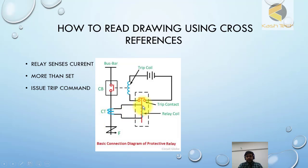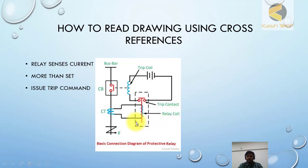Sometimes a relay does not give a trip command directly to the coil. Instead, it operates an intermediate relay and tripping is initiated through that relay's auxiliary contact. These intermediate relays are called tripping relays, and the relay which is sensing the fault and operating the tripping relay is called the main relay.